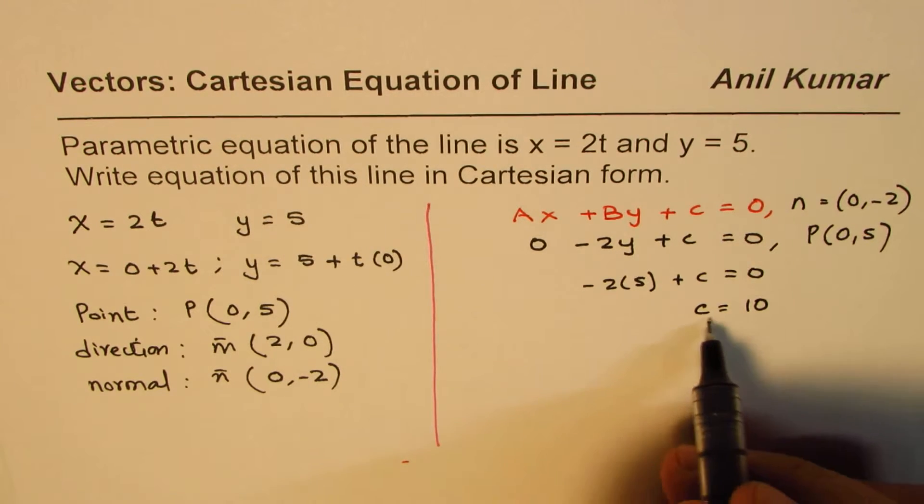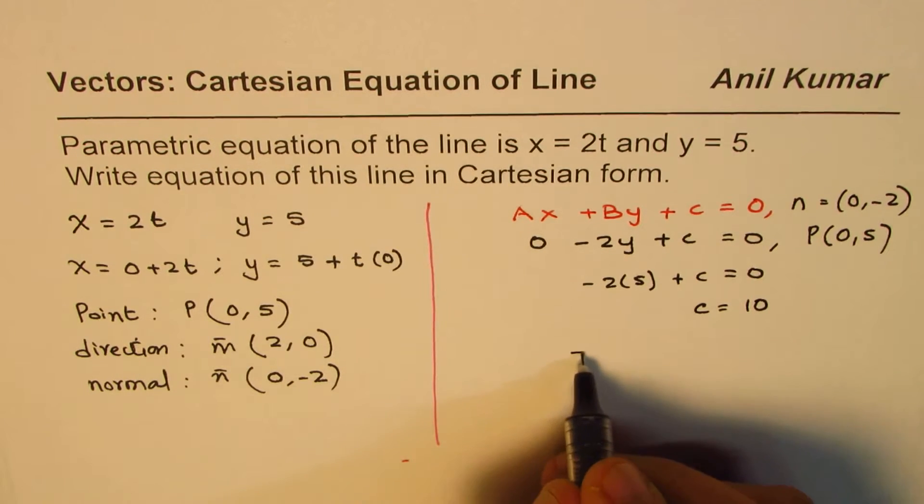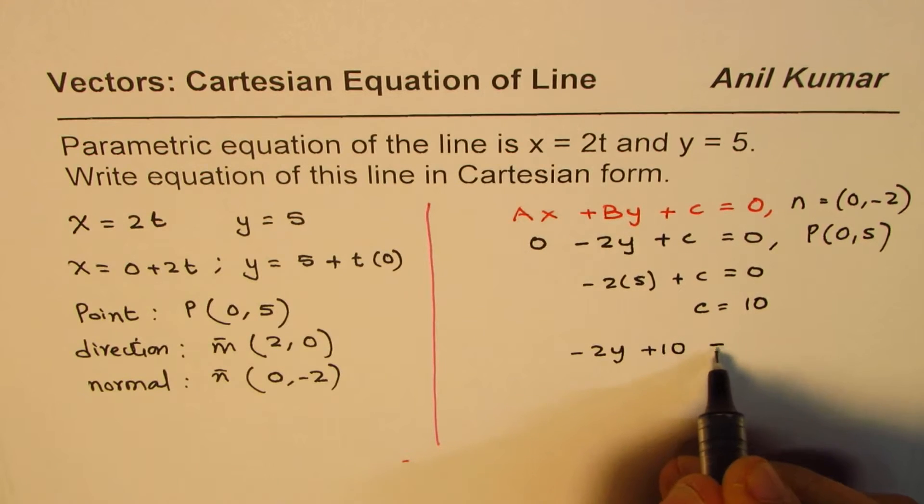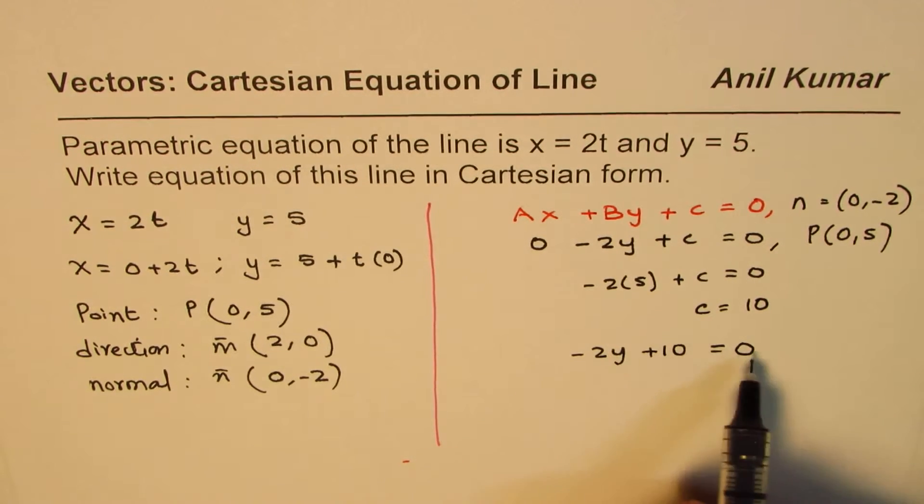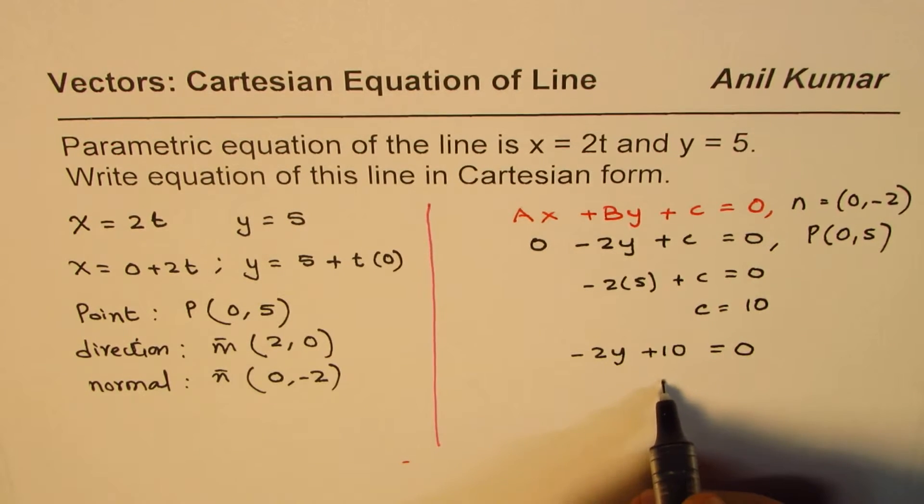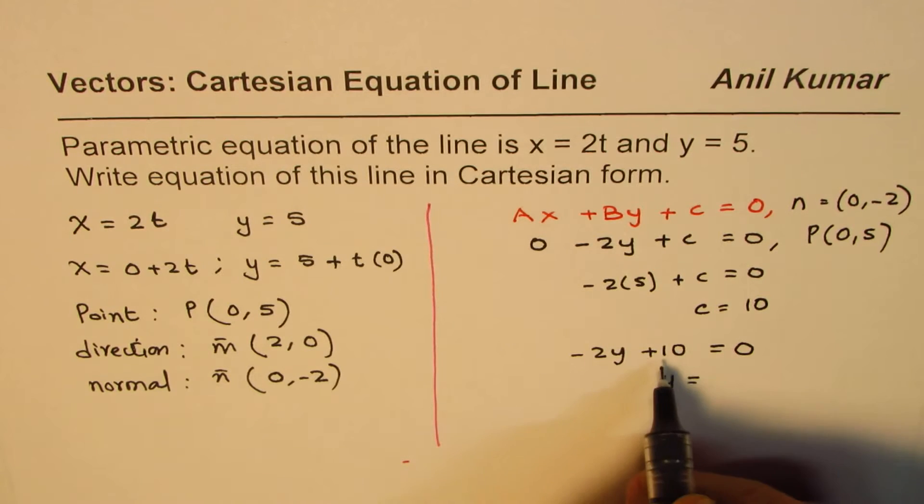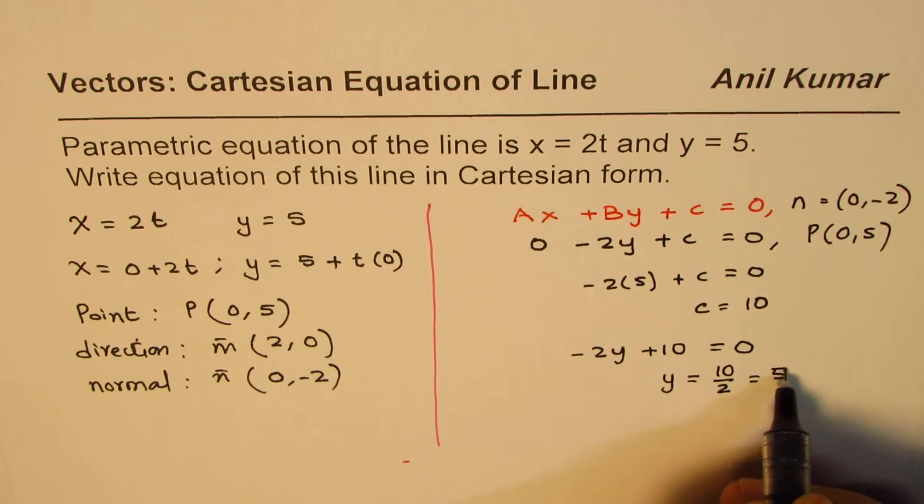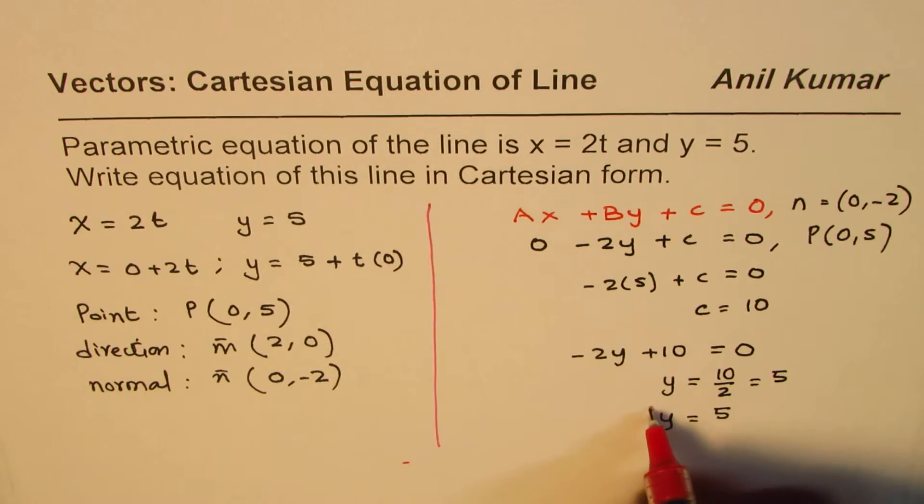C equals 10 for us, and from here we could write down the equation of the line. If c is 10, we can write minus 2y plus 10 equals 0 as the equation of line. Or if we interchange, then we could also write this as y equals 10 divided by 2, which is 5.